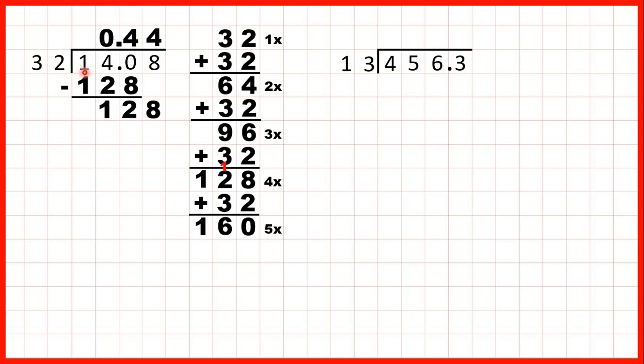And notice, 14.08, though it has more digits, is actually less than 32. And if the dividend is less than the divisor, we'll always get 0 point something as our answer. So you can divide a smaller number by a larger number, but when you do that, you'll always get an answer of less than 1.